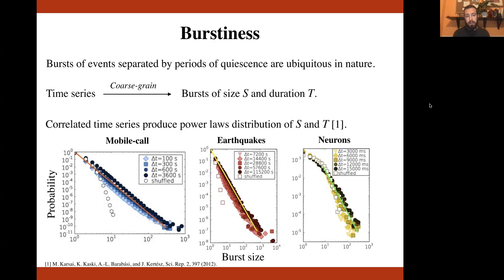It's known that if there are correlations inside the time series, the probability distributions of sizes and duration display a power law tail.